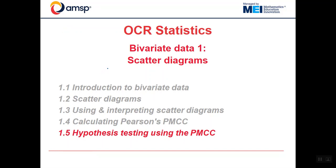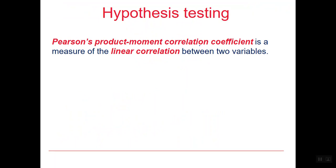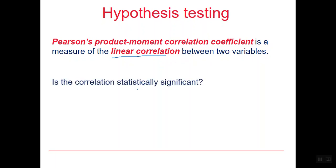This is OCR Statistics Bivariate Data 1 Scatter Diagrams, video 1.5, which is on hypothesis testing using the PMCC. In the previous video we discussed Pearson's product moment correlation coefficient as a measure of linear correlation between two variables. What we are interested in now is whether that correlation is statistically significant, and in order to find that out we need to do something called a hypothesis test.